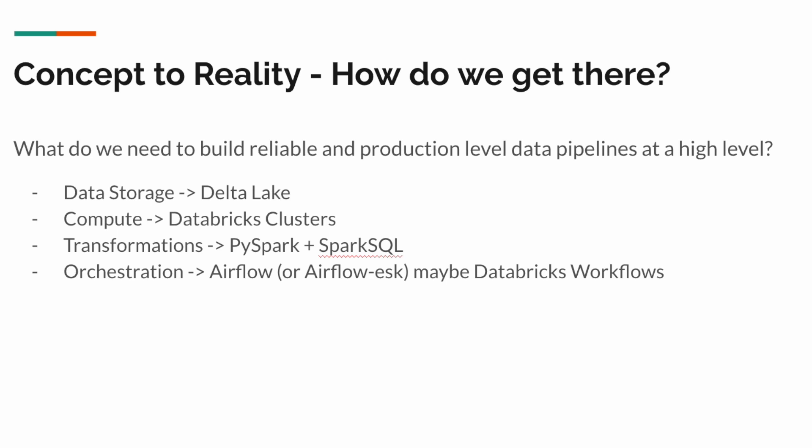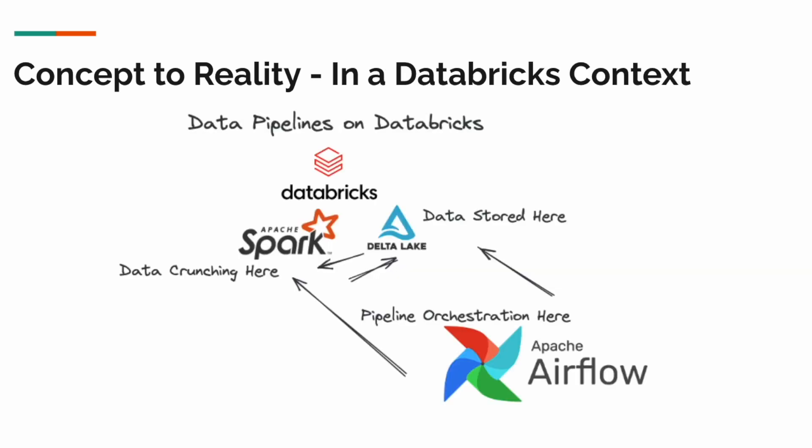A data pipeline in Databricks means you have Delta Lake — that's where your data is stored, where you push and pull data when running your pipelines. Then you're using Apache Spark to do all the heavy data crunching, and orchestration is handled by Apache Airflow.